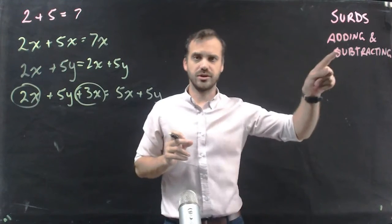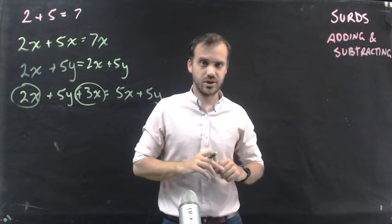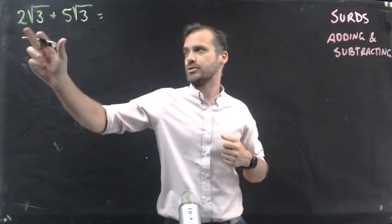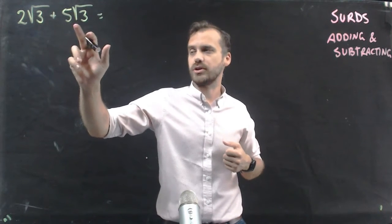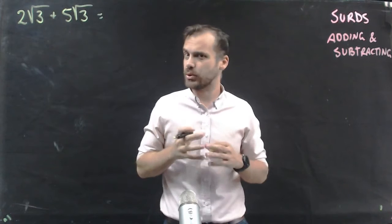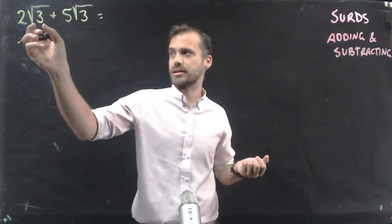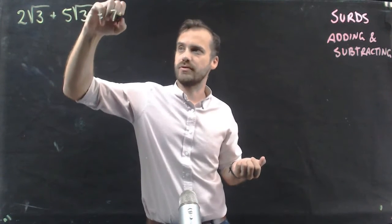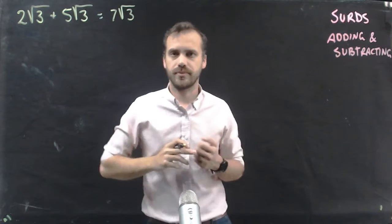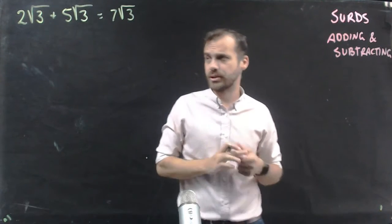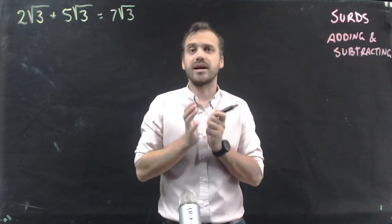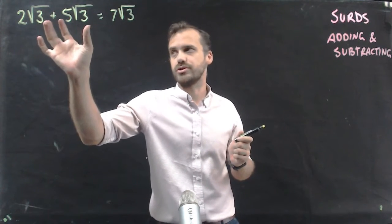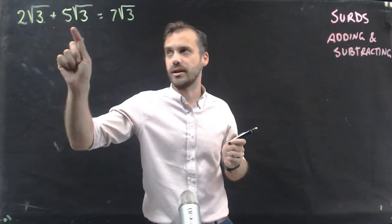But we're talking about surds, so let's start talking about surds. 2 root 3 plus 5 root 3 — that's 2 times root 3 plus 5 times root 3. It's the same question as 2x plus 5x; it's just that the x is a root 3 this time. So 2 root 3 plus 5 root 3 is 7 root 3. A common mistake is to look at the root 3s and think you need to add them together as well — you don't. You only add the 2 and the 5.